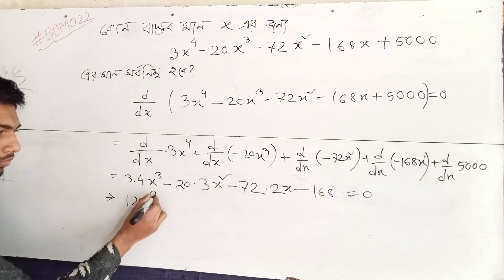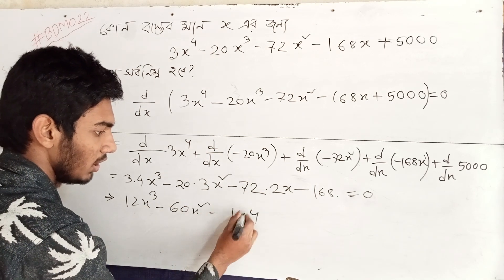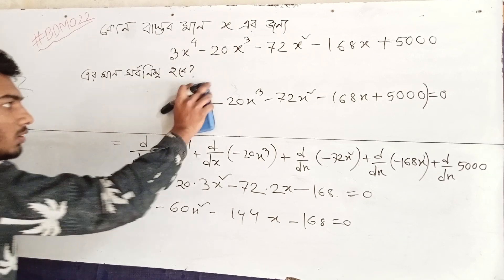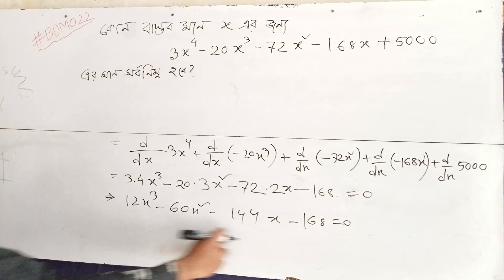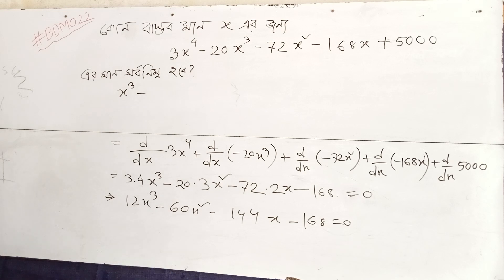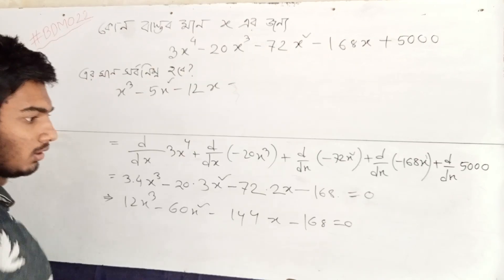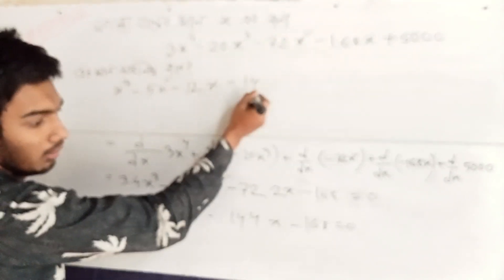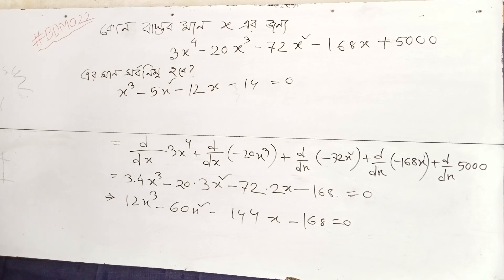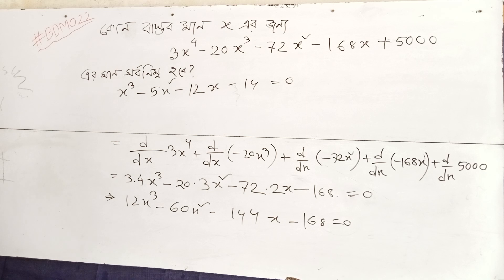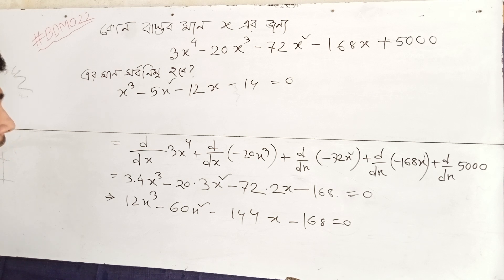So we get 12x³ minus 60x² minus 144x minus 168 equals 0. Dividing by 12, we get x³ minus 5x² minus 12x minus 14 equals 0.